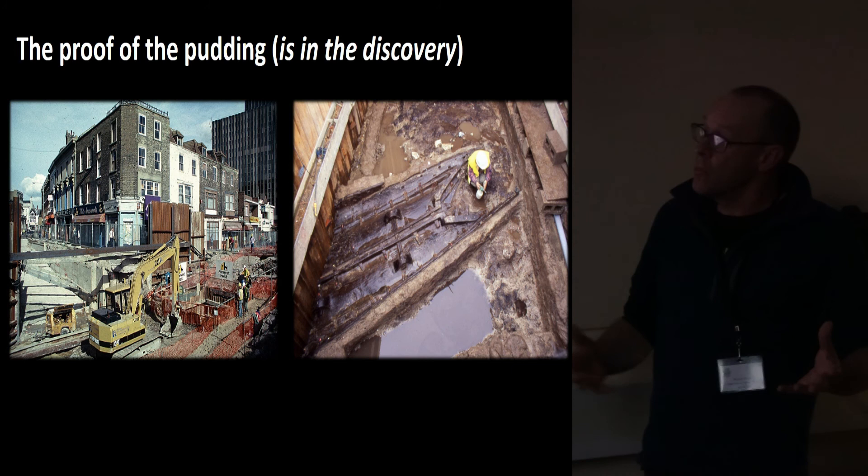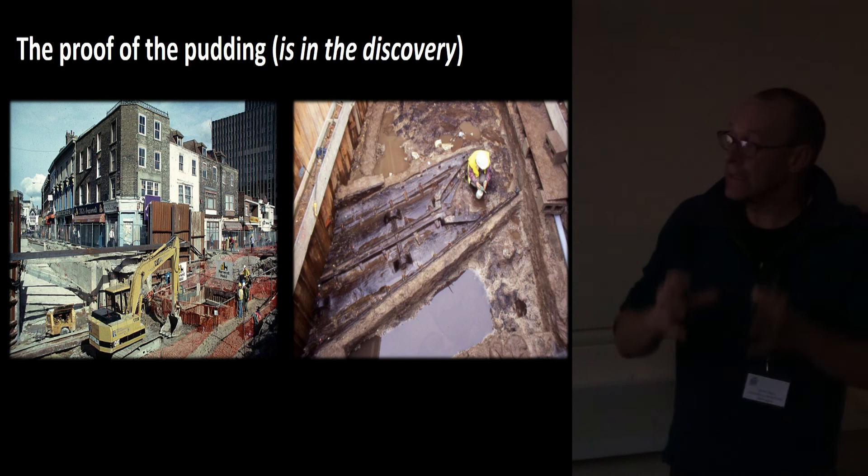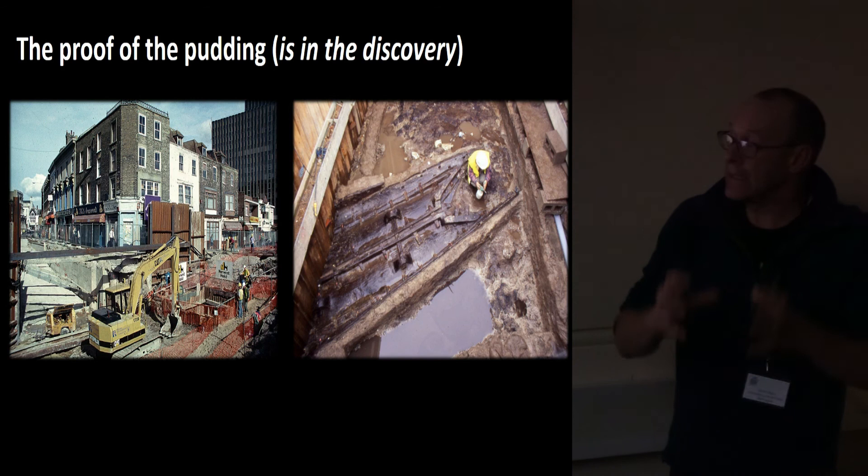Proof of the pudding is: do we actually find anything? That approach — getting the lines in the right place — got us in the right place to find the Dover Boat. I think that probably exemplifies it.